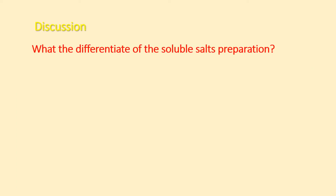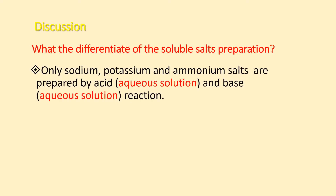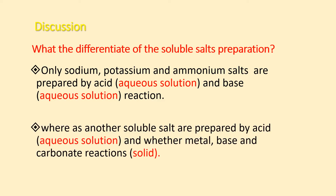Discussion: What is the difference? Only sodium, potassium, and ammonium salts are prepared by the first method, which is acid and base. Other soluble salts are prepared by acid with carbonate, metal oxide, or metal. Be careful with copper and silver, as they are metals less electropositive than hydrogen — so the third method cannot be used for them.